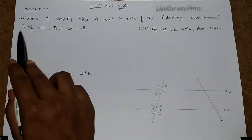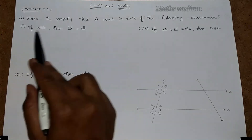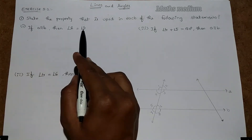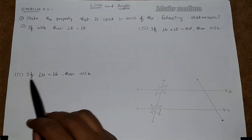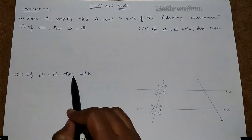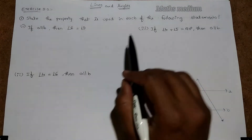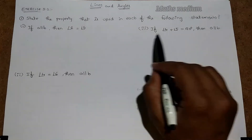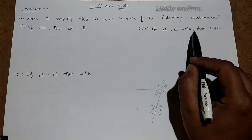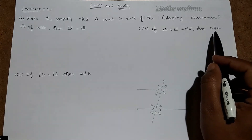Question number 1: (i) If A parallel to B, then angle 1 equal to angle 5. (ii) If angle 4 equal to angle 6, then A is parallel to B. (iii) If angle 4 plus angle 5 equal to 180, then A is parallel to B.